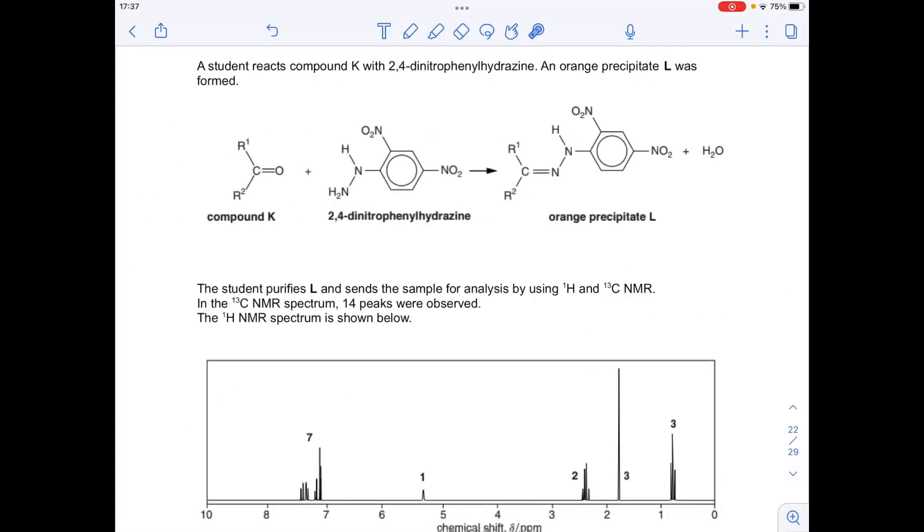Okay, so essentially we've got to work out what these two R groups are in the orange precipitate L. We've got some information from the carbon-13 NMR spectrum, so there were 14 peaks observed. Obviously that means there's 14 different carbon environments in L. We'll come back to the carbon-13 NMR spectrum once we've got a very good idea about what the structure is.